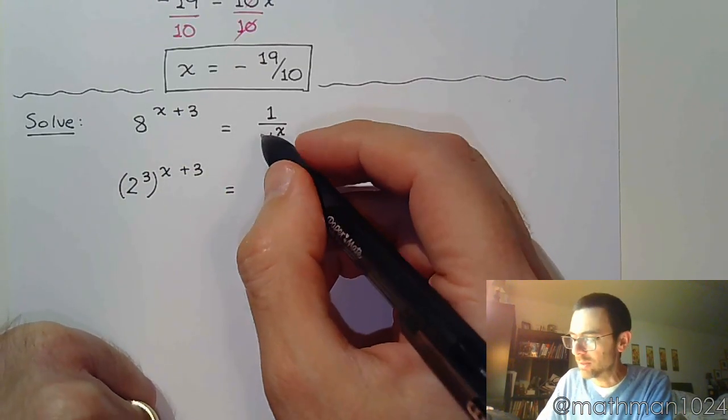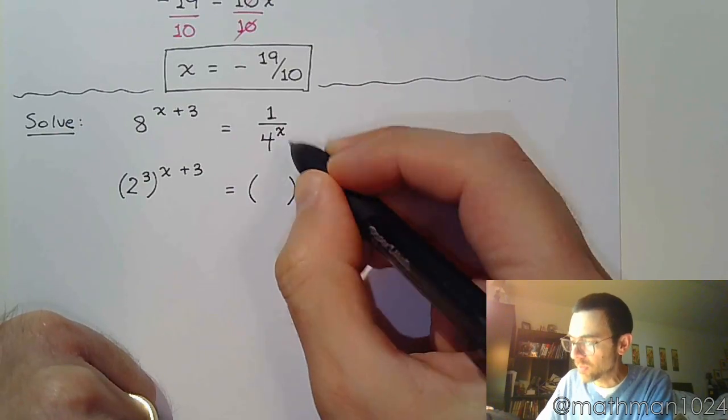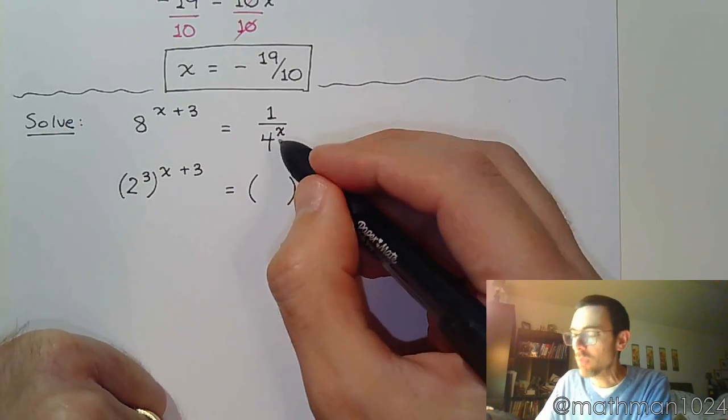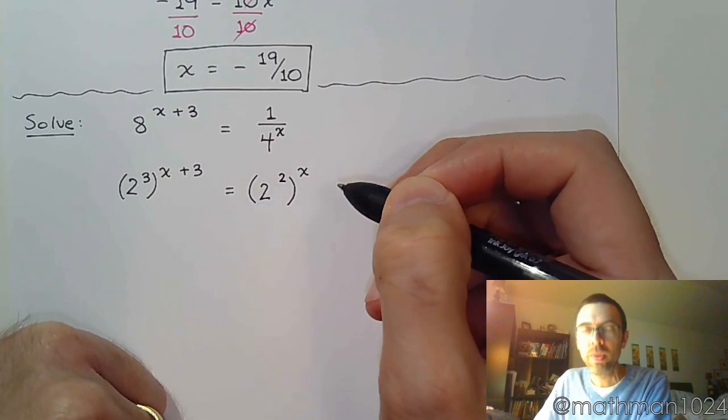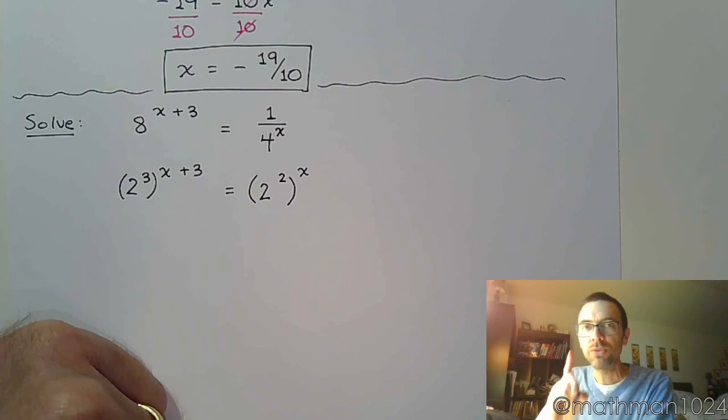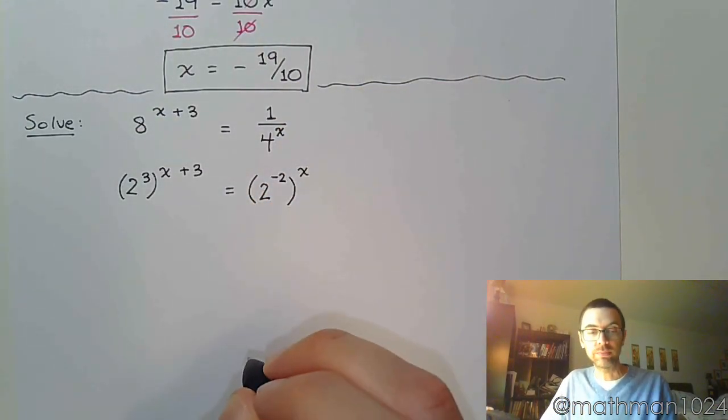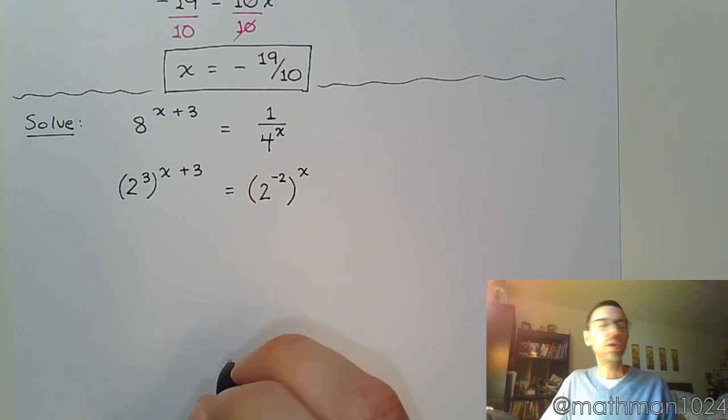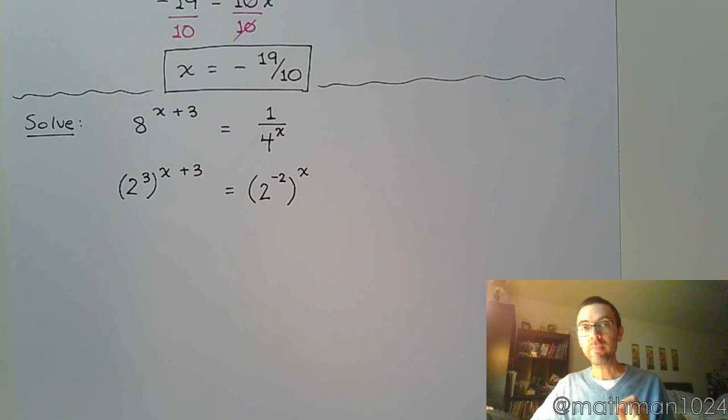All right. So, raised to the x plus 3. Now, this x right here, I'm just going to let him be on the outside of this expression. And how do we rewrite 4? Well, we do know that it's 2 squared. But, this 4 was in the denominator, so that means it's going to be negative 2.